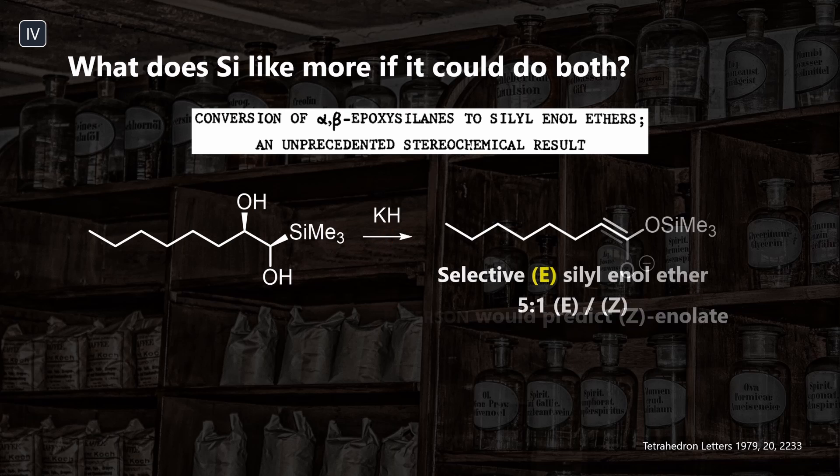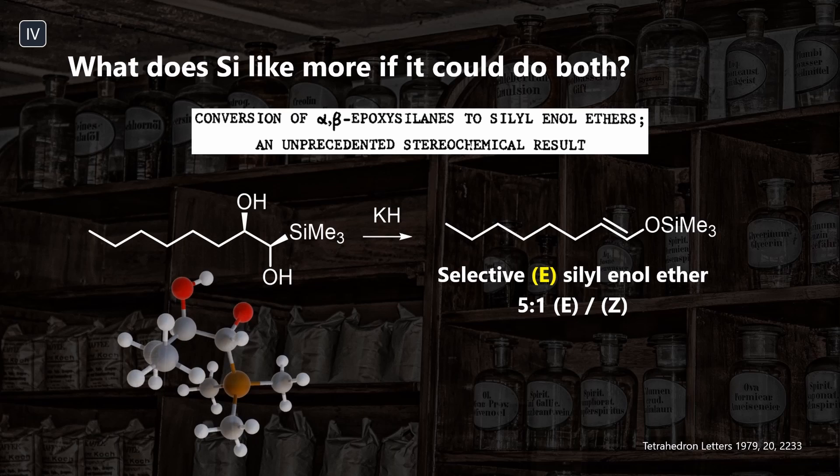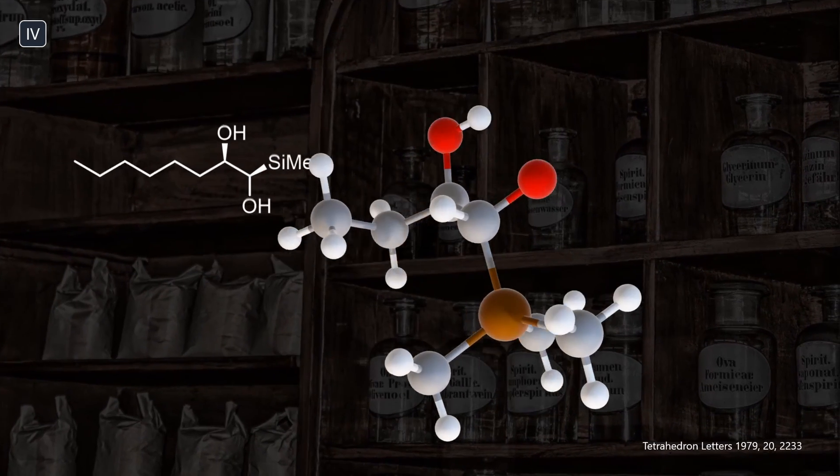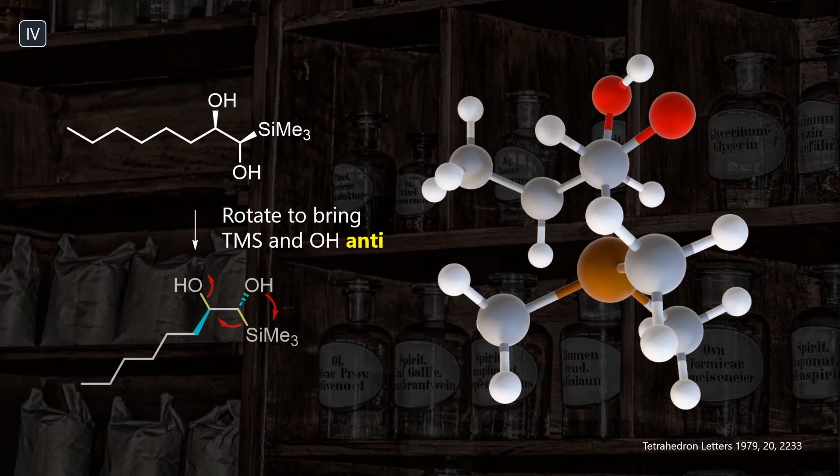Instead, the reaction gave the E-silyl enol ethers selectively. It looks like we have a hybrid pathway at hand. Our model can help visualize the stereochemistry. A Brook migration of the silyl group occurs first, but instead of protonation of the anion, we can eliminate the beta-hydroxy group.